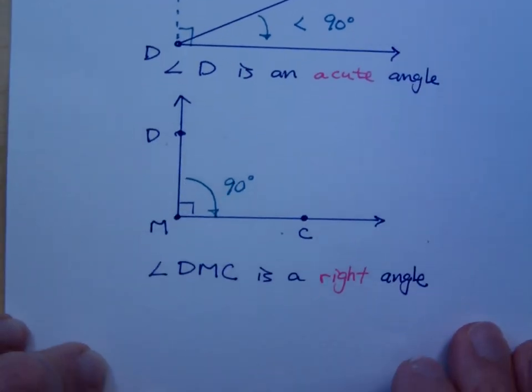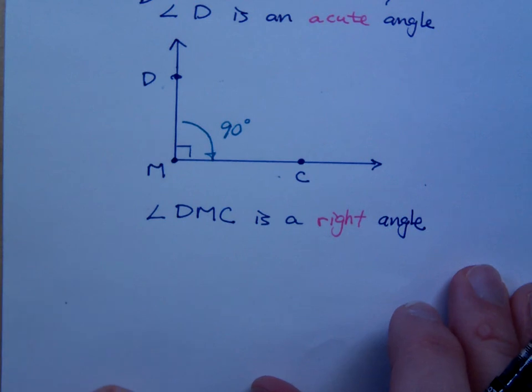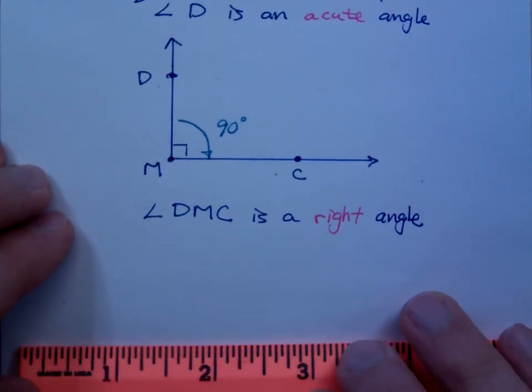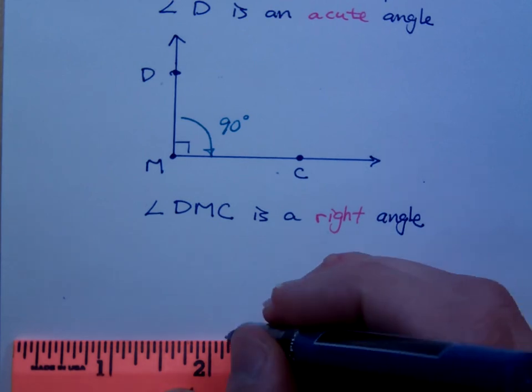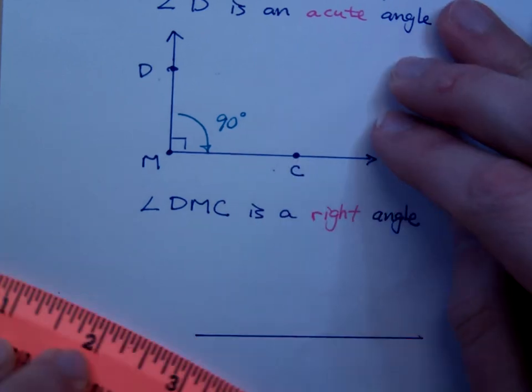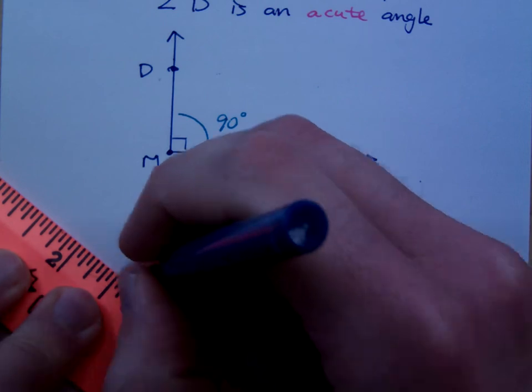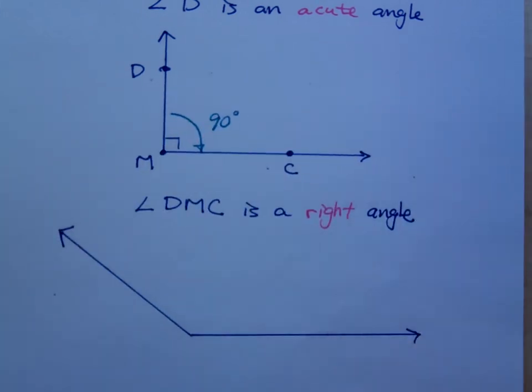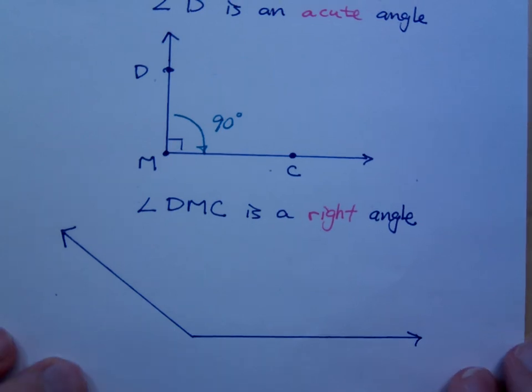And what was the fourth type of angle that we could have? Obtuse. What is an obtuse angle? How would you describe an obtuse angle? More than 90 degrees. Thank you.